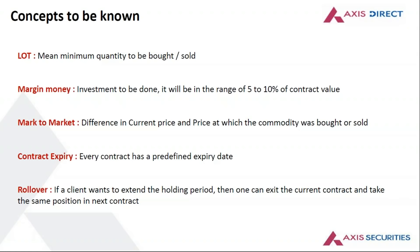Mark to market is nothing but the price difference between the current price and the price at which you bought or sold. If I bought a commodity at 100 rupees and the current price is 110, I am on a positive mark to market of 10 rupees — a notional profit. But if I bought at 100 and the price is now 90, I am on a negative mark to market of 10 rupees, and I will have to top up that amount. On the positive side, if the mark to market is positive, you can withdraw it at any point.